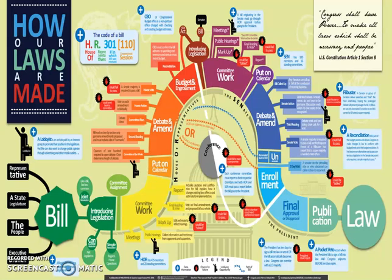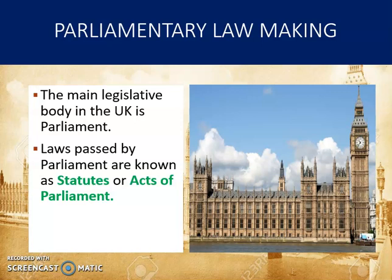Hello everyone and welcome to this video tutorial on parliamentary law making. Today we're going to be looking at how a bill becomes an act of parliament. We already know that the main legislative body in the UK is parliament, which is responsible for making our laws, and parliament is made up of three elements: the House of Commons, the House of Lords, and the monarchy. Laws passed by parliament are known as statutes or acts of parliament.